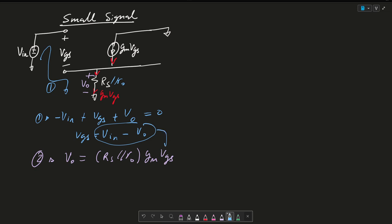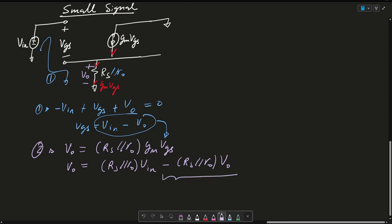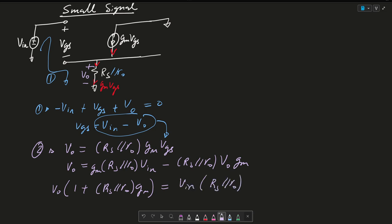Vgs is basically this. So I'm going to plug it in here. I'm going to receive V0 equals RS||RO·Gm times (Vin minus RS||RO·Gm·Vout). If I go ahead and add this term to the right hand side and pull out a V0, I get V0(1 + RS||RO·Gm) equals Vin·RS||RO·Gm. I was missing a Gm on both terms.